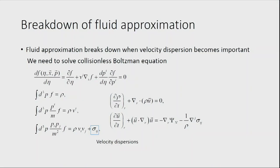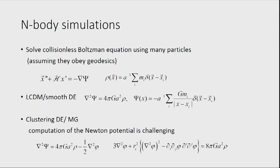To emphasize: what N-body simulations need is the geodesics of dark matter particles, which require the Newtonian potential. In Lambda-CDM, the Poisson equation is linear, so the potential is just 1/r, enabling fast algorithms. However, in clustering dark energy or modified gravity, the Poisson equation becomes very complicated. For example, in modified gravity there is an additional scalar field satisfying a very complicated nonlinear equation. This is the origin of the screening mechanism. You cannot use the 1/r formula; you must solve the nonlinear scalar field equations to compute the additional force and add it to the gravitational force.